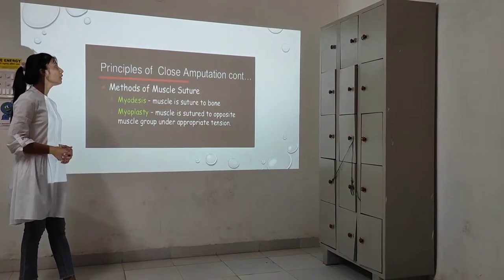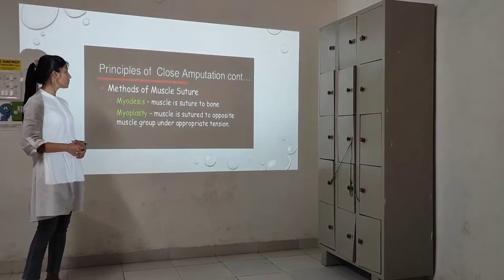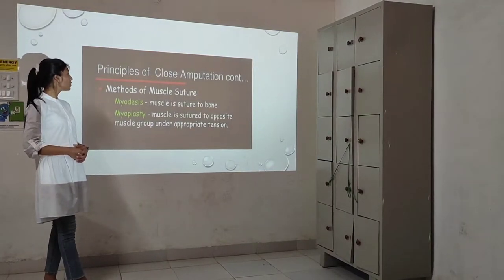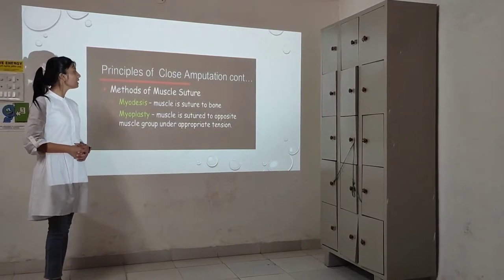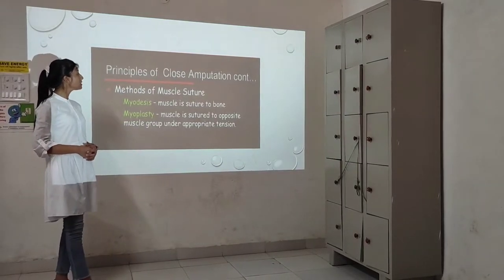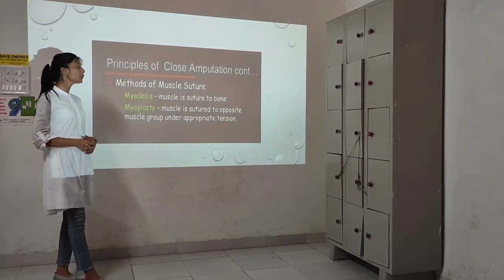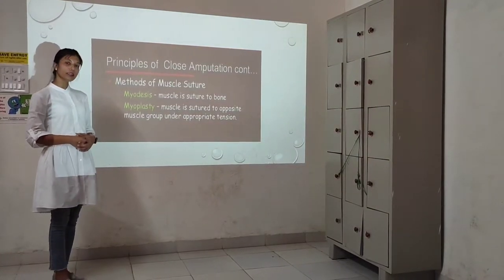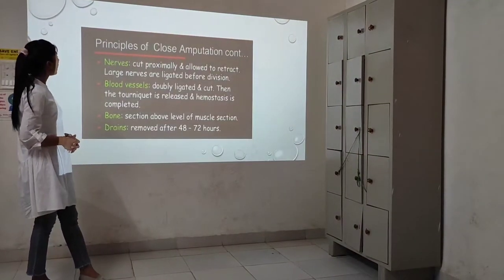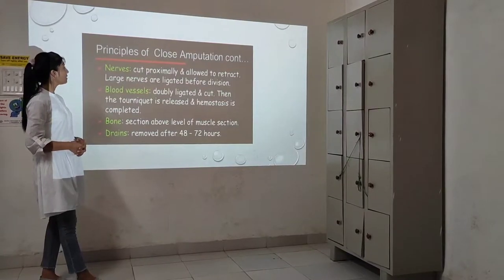The principles of closed amputation include methods of muscle sutures: myodesis — where the muscle is sutured to the bone — and myoplasty — where the muscle is sutured to the opposing muscle group under appropriate tension. The principles also address nerves, blood vessels, bone, and drains.